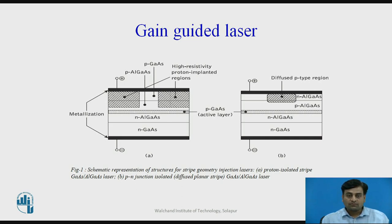In figure 1a, the resistive region formed by the proton bombardment gives better current confinement than a simple oxide strip, and has superior thermal properties due to the absence of silicon dioxide layer.